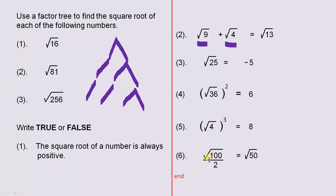And the last one, the square root of 100 divided by 2 is the same as the square root of 50. So we have to work out whether that's true or false.